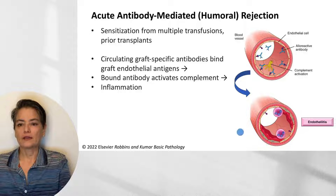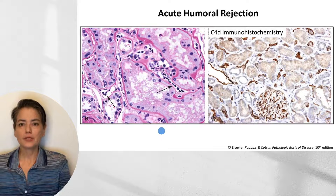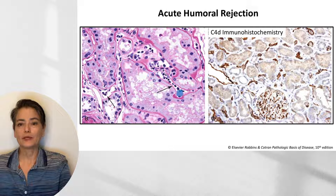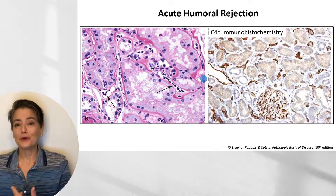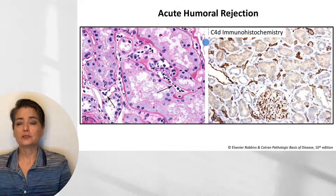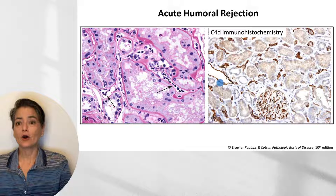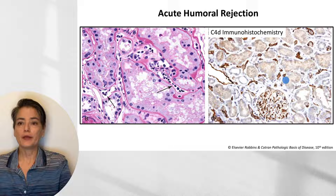Histologically, acute humoral rejection shows inflammation of the capillaries — a very subtle distinction best appreciated by renal pathologists. What helps is that in humoral rejection there is deposition of antibodies with complement activation, so we can use immunohistochemical stains for complement components such as C4D. With the C4D antibody stain, all of the endothelium lights up, indicating abundant complement deposition consistent with humoral rejection.